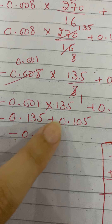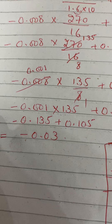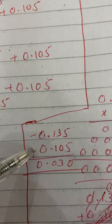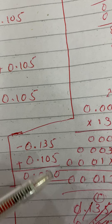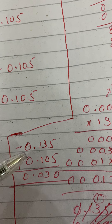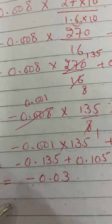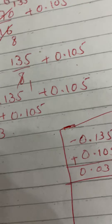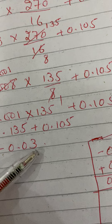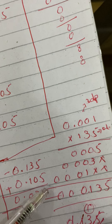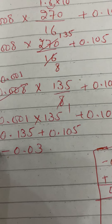We now have minus 0.135 plus 0.105. Since we have plus and minus together the result is negative, so we subtract: 5 minus 5 is 0, 3 minus 0 is 3, 1 minus 1 is 0, 0 minus 0 is 0. The answer is 0.030, or simply minus 0.03.